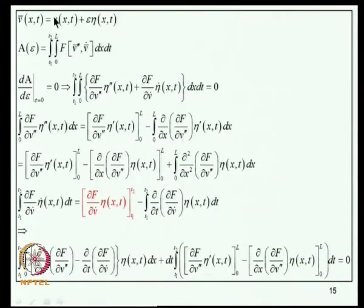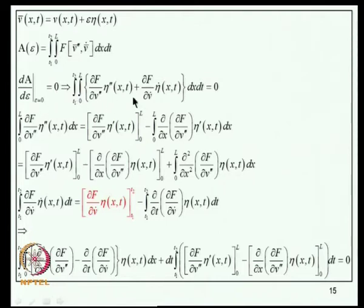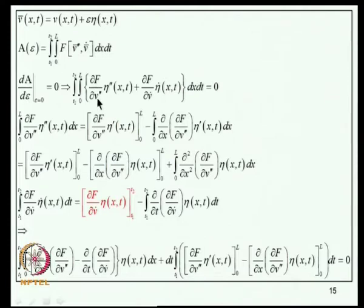The Lagrangian T minus V and the action integral are formed. The Lagrangian is a function of V-double-prime and V-dot, so the action integral can be written as F(V'', V_dot). The unknown optimal solution and its variation parameterized by epsilon are defined. Setting dA/d(epsilon)=0 at epsilon=0 gives: the integrand involves partial F/partial V'' times eta'' plus partial F/partial V_dot times eta_dot.